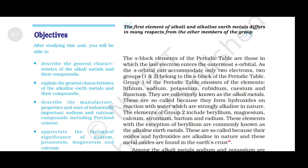Group 1 of the periodic table consists of the elements lithium, sodium, potassium, rubidium, caesium and francium. They are collectively known as alkali metals. They are so called because they form hydroxides on reaction with water which are strongly alkaline in nature.